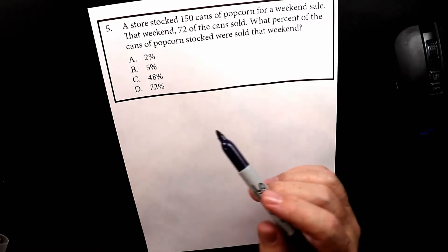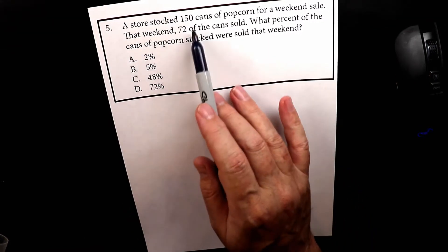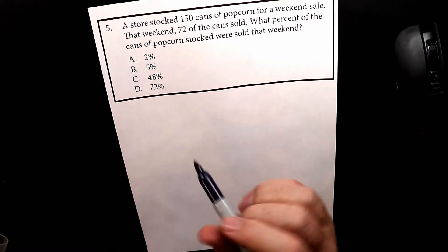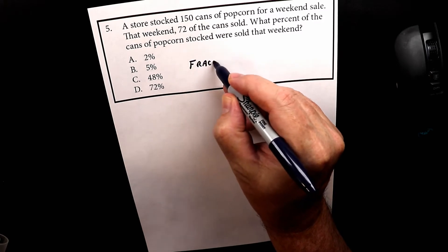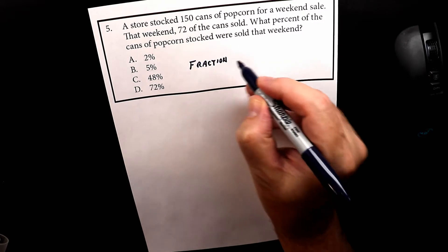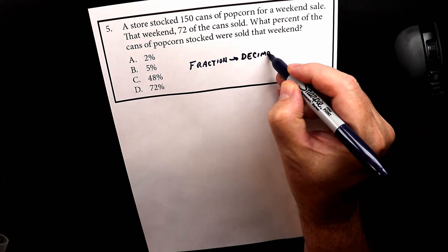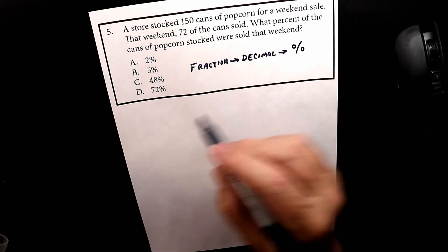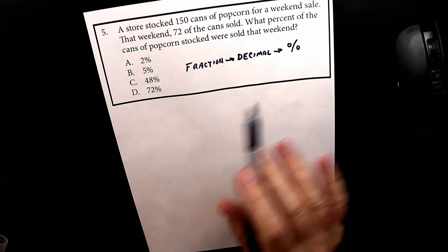So what we're going to do is figure out what percentage were sold, but before that we have to figure out what the fraction is. So we're going to go from a fraction to a decimal to a percent, because we have to find a percentage.